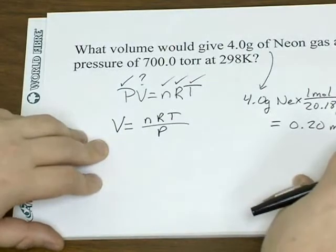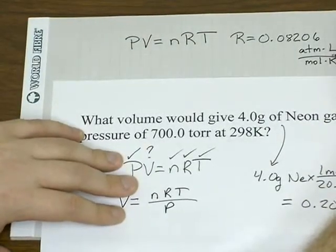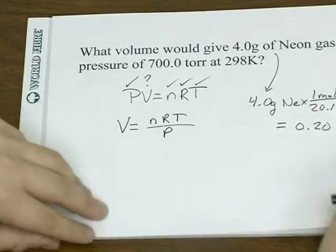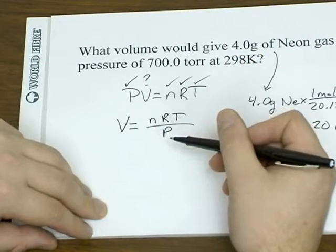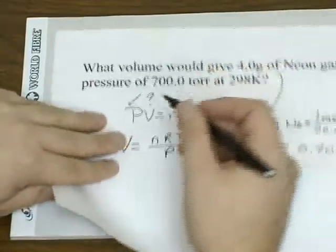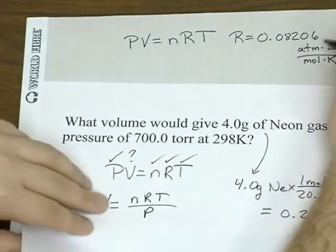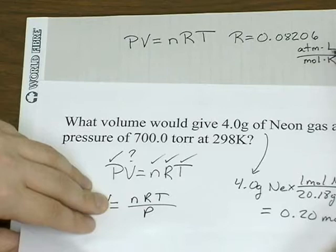One thing you have to watch out for when you use the ideal gas law is that there are units associated with the gas constant: atmosphere, liter, mole, kelvin. If you want to end up with a number that's in units of volume, the three variables you have must match the units you find in your gas constant R.